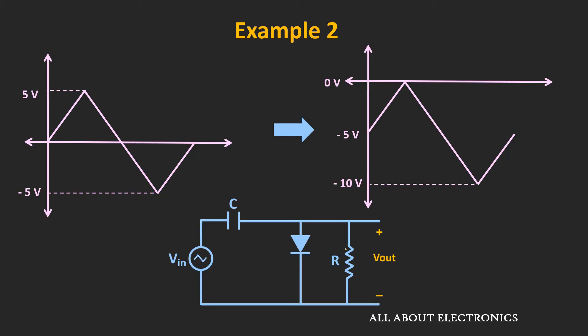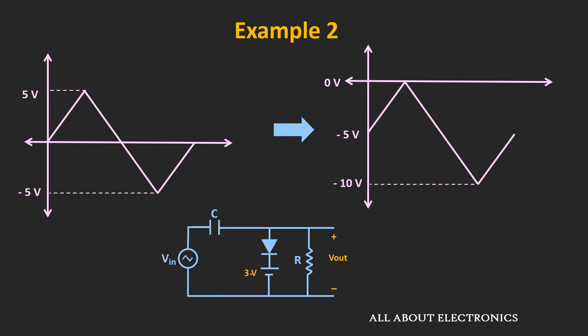But in this given example, we also have a 3V biasing voltage. So due to this biasing voltage, this waveform will get DC shifted by 3V in the positive direction. If you see the overall output waveform, then it will look like this. That means now the waveform will vary from 3V to minus 7V.